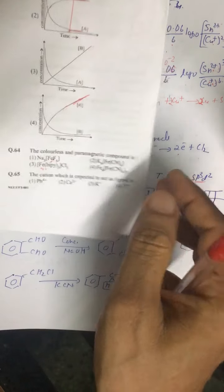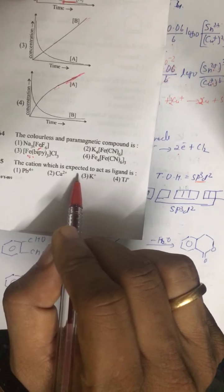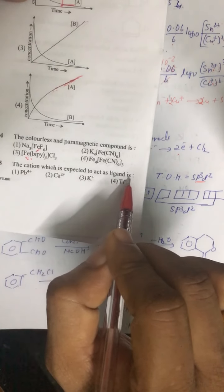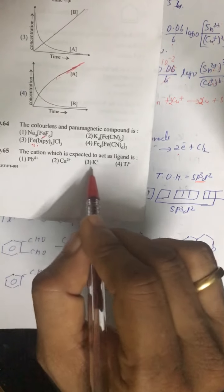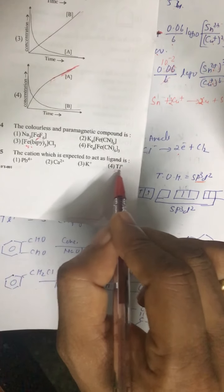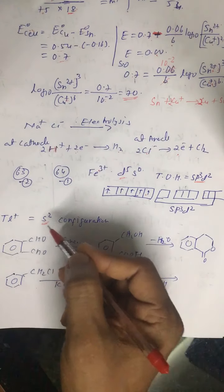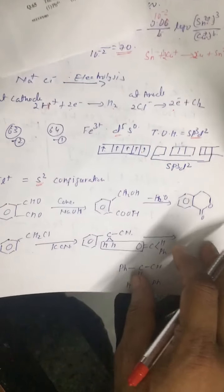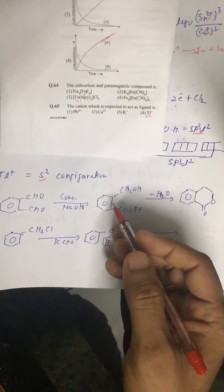Question number 65 asks which cation is expected to act as a ligand. In thallium(I), Tl⁺, we have an s² configuration, meaning it can donate an electron pair and behave like a ligand. This is a very typical but uncommon concept. The correct answer is the fourth option.